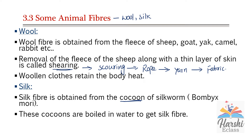We get silk from silkworm, which lives on the leaves of mulberry tree. The larva of the silkworm secretes a sticky fluid which becomes silk fiber. In its entire life it secretes around 800 meters of silk fiber. The larva then covers its body with silk fiber and turns into a pupa. This protective covering is called a cocoon. These cocoons are boiled in water to get silk fiber.